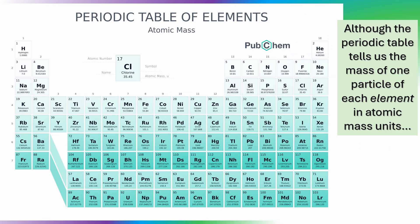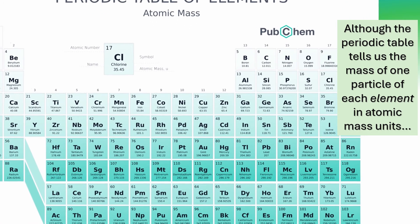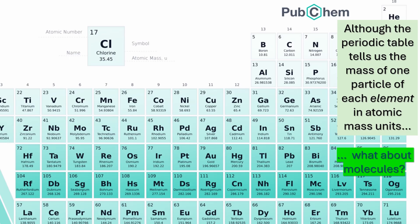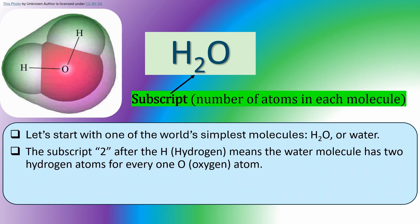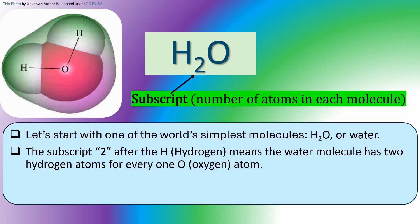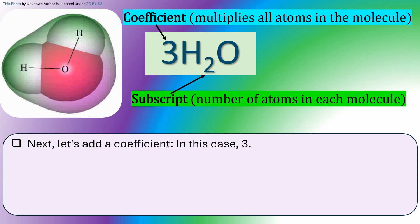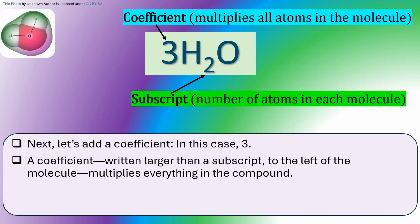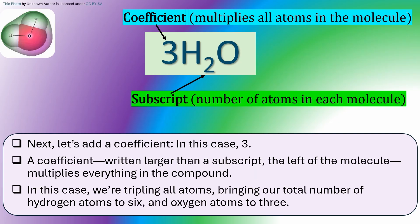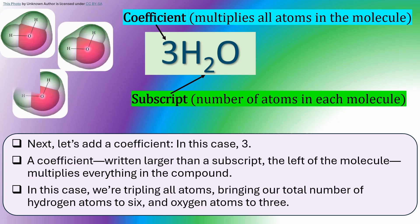Although the periodic table tells us the mass of one particle of each element in atomic mass units, what about molecules? Let's start with one of the world's simplest molecules, H2O or water. The subscript 2 after the H in hydrogen means the water molecule has two hydrogen atoms for every one O, or oxygen atom. Since there's no subscript after the O, we presume there's only one oxygen atom per molecule. Next, let's add a coefficient, in this case 3. A coefficient, written larger than a subscript to the left of the molecule, multiplies everything in the compound. In this case, we're tripling all atoms, bringing the total number of hydrogen atoms to 6 and oxygen atoms to 3.